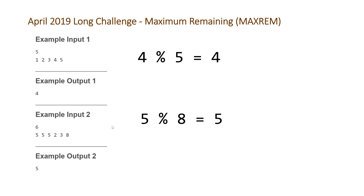You can brute force this, but due to the constraints of up to 10^5 elements, a brute force would be quadratic and we would time out. The trick is noticing that the maximum is always going to be the modulus of the two largest unique elements. Whenever one element is smaller than another and you modulus the two — like 4 modulus 5 or 5 modulus 8 — since the divisor is bigger, it never divides any number of times, so we just get back the first number.